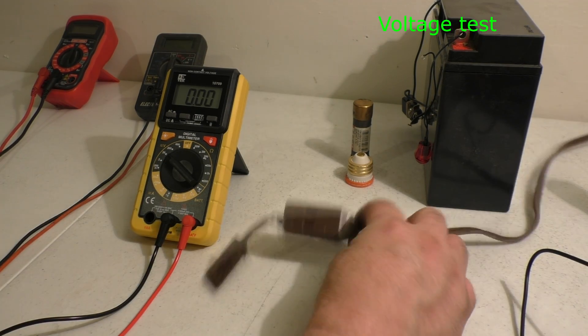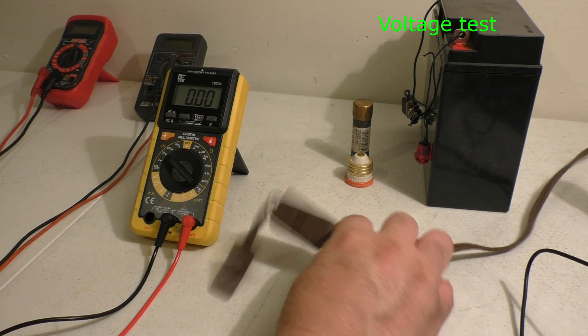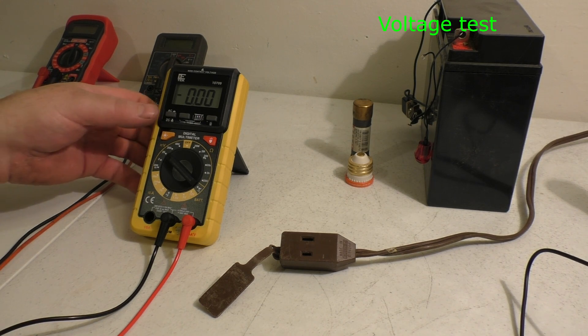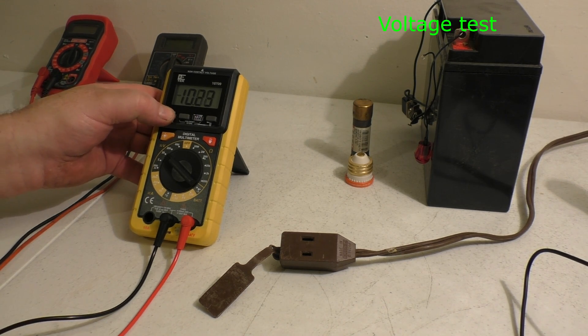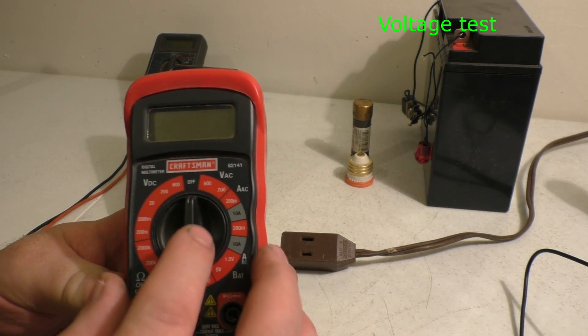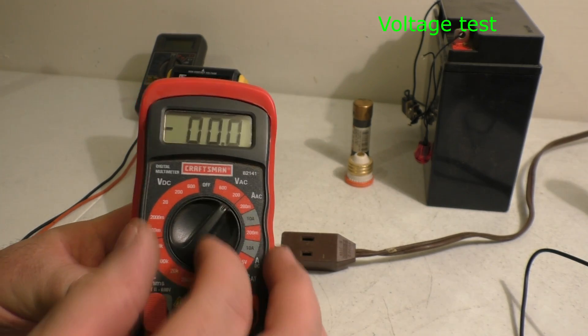Now for household current, I have an extension cord plugged in here. This one here, use caution. As long as you don't touch any metal parts, you'll be all right. I'm going to go ahead and turn it to AC. On ones as this, like I said, here's volts AC.